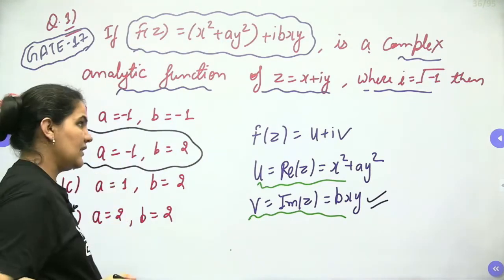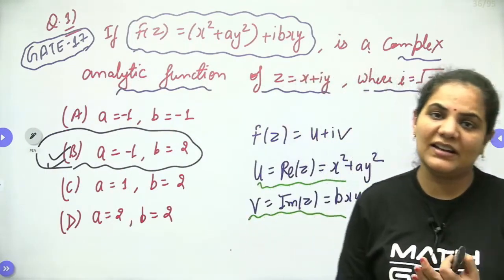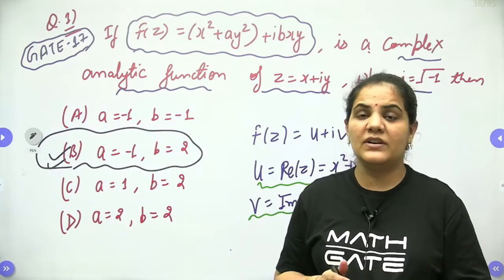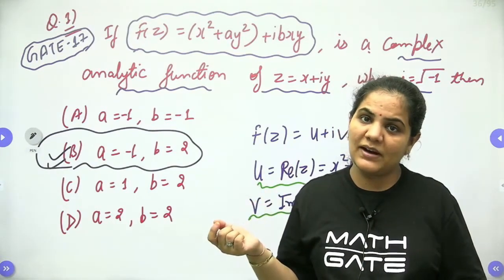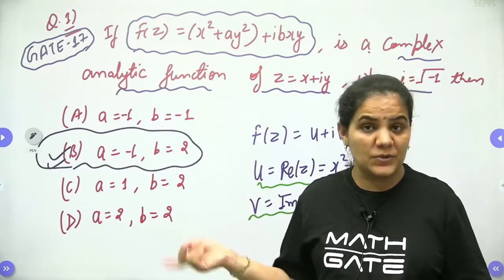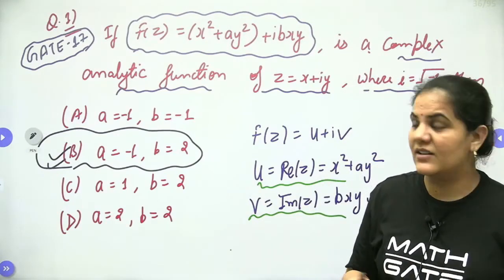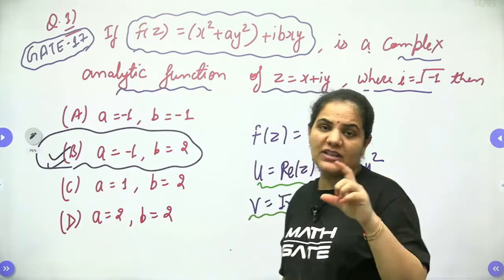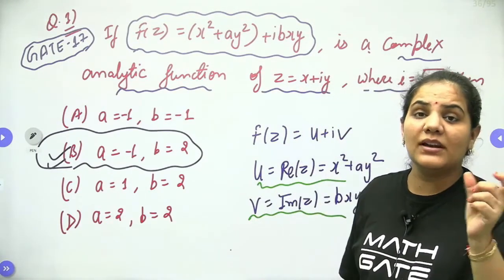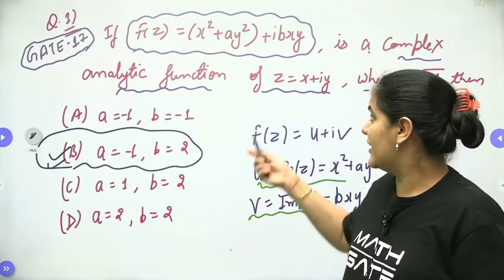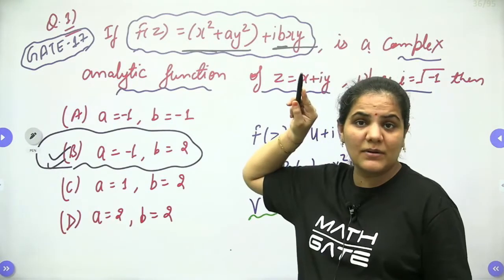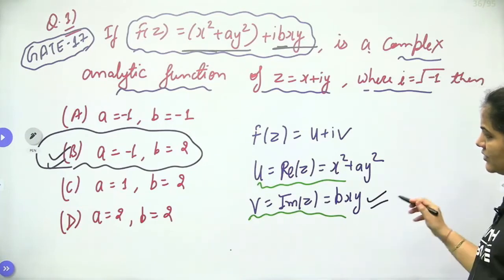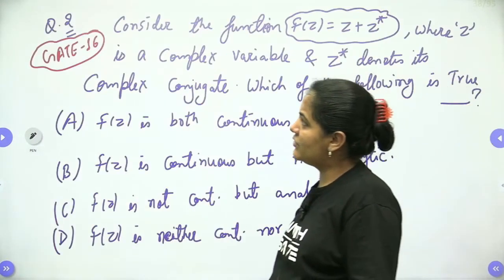The answer a equals minus 1 and b equals 2 corresponds to option B. These types of questions can be framed in the analytical function concept. There are only two possibilities: either the real part is given and you find the imaginary part using the Cauchy-Riemann equation, or you have the complete function f(z) with some unknown quantities and you need to find those unknowns — just as in this question.